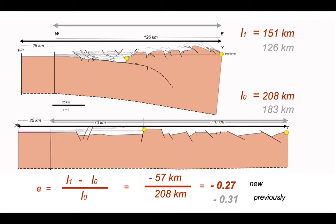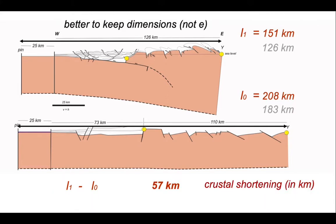So it might be that actually what we should do is simply report the crustal shortening in kilometres. It remains 57 kilometres regardless of where we put the pin. It could be another 100 kilometres out to the left and the difference in the section length would still be 57 kilometres.